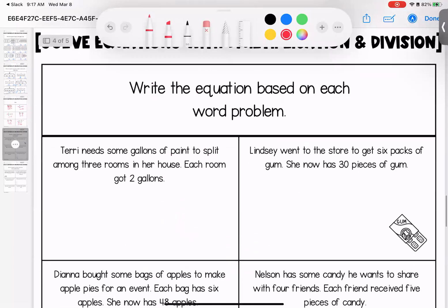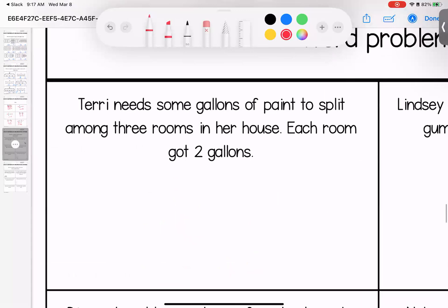All right, sweet faces, we're looking at some word problems and I want you to write the equation. So it says that Terry needs some gallons of paint to split among three rooms in her house. Each room got two gallons. So Terry needs some paint to divide among three rooms. Each room got two gallons.